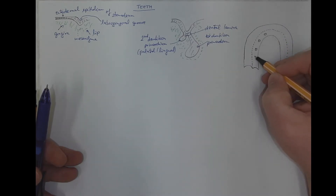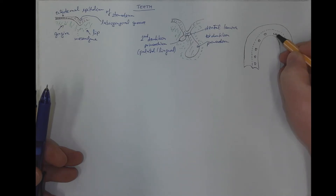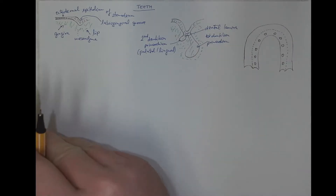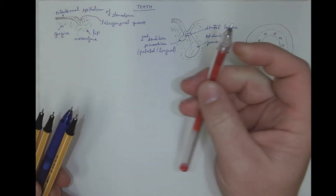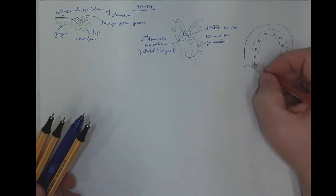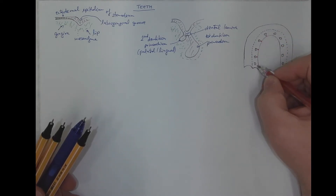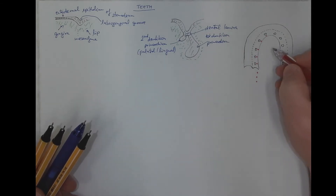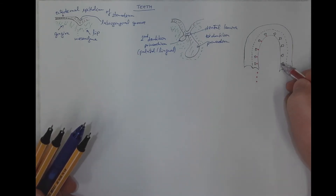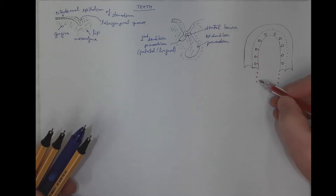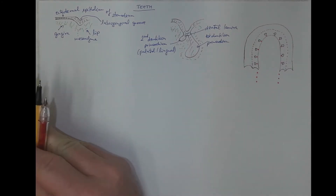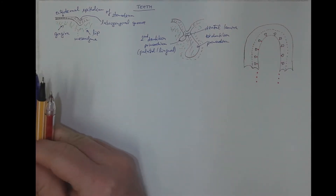There are five primordia for the first dentition in one quadrant and five in the other quadrant — ten total. On the palatal or lingual side we also have primordia for the second dentition: five plus three more, making eight primordia per quadrant for the second dentition, compared to only five for the primary dentition.